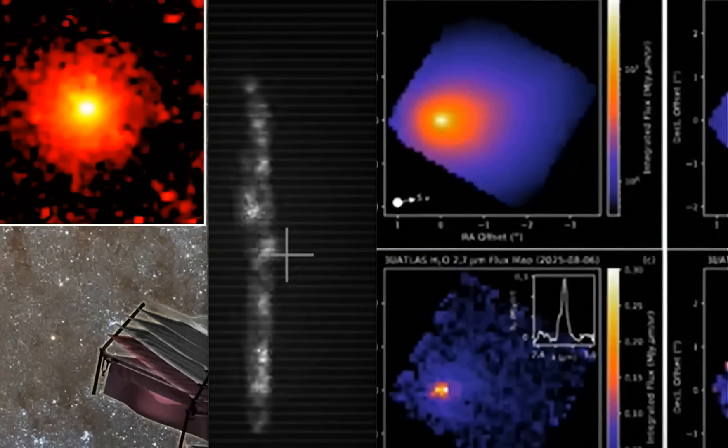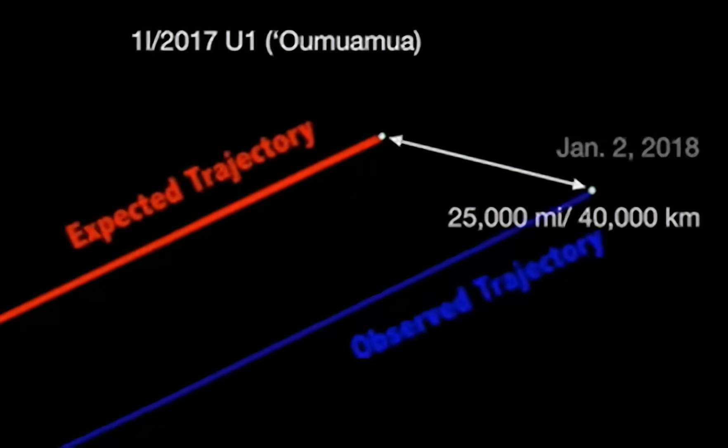Then, they release information on Oumuamua stating that, indeed, this thing was not a comet neither. It was an interstellar object, as they're dubbing, and it picked up speed as it took off out of here. Now, they say that when Oumuamua took off and picked up the speed, its expected trajectory did not match what they observed.